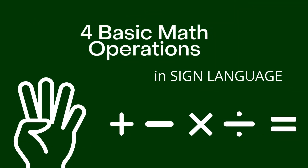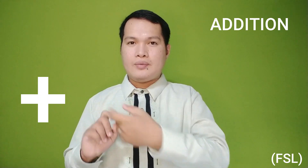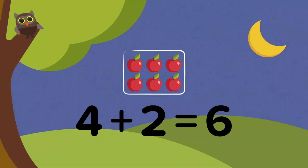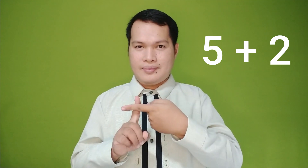For basic math operations in sign language, addition in FSL uses a cross to show addition, or 'in addition to.' In ASL, for example, 5 cross 2 — using the cross sign — or 5 in addition to 2.